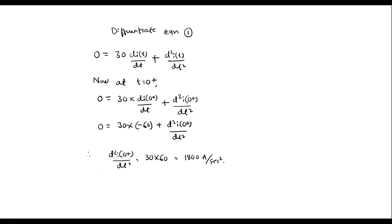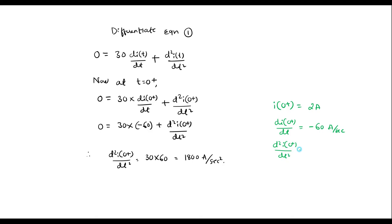Thus we have found all three parameters: i(0+) equals 2 amps, di(0+)/dt equals minus 60 amps per second, and d²i(0+)/dt² equals 1800 amperes per second squared.